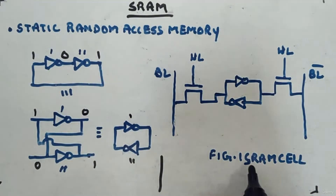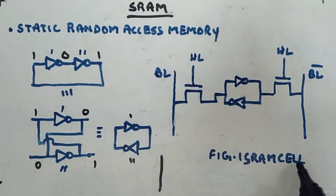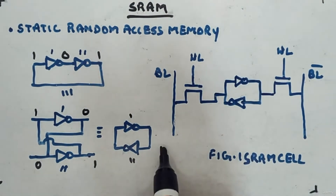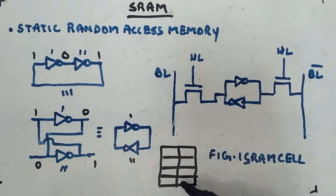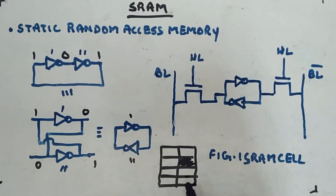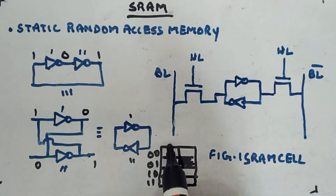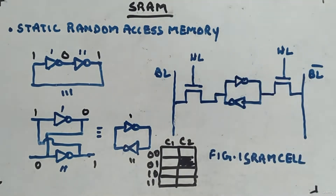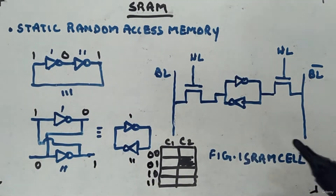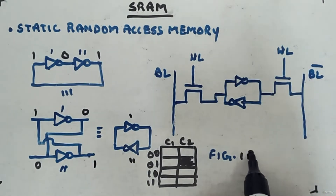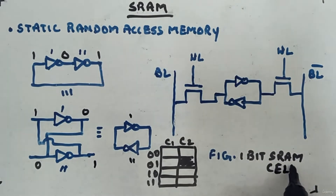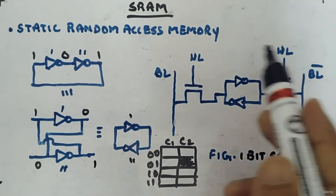This is one SRAM cell — one cell represents one bit of storage. Imagine a RAM with two bits and four locations: each row represents an address location and each column represents a bit. One SRAM cell sits at the intersection of one row and one column. It stores either logic 1 or logic 0 — it is storing only 1 bit.